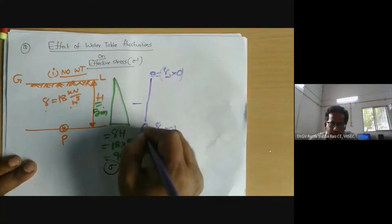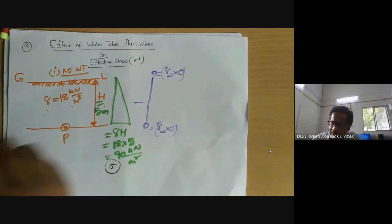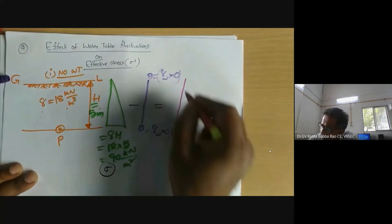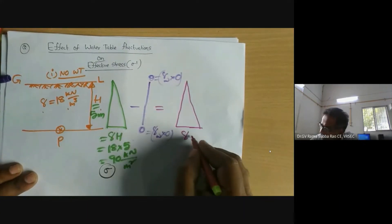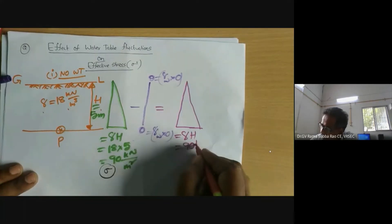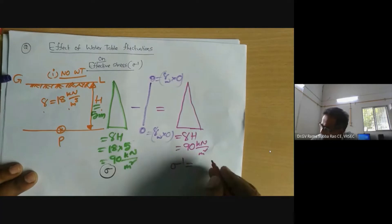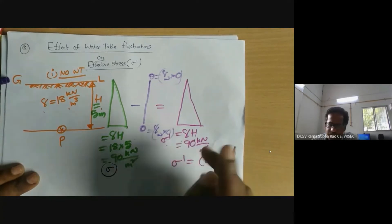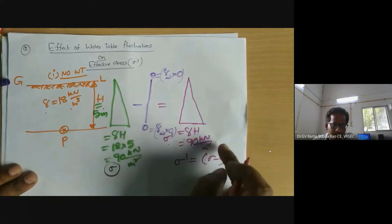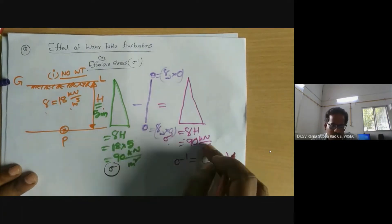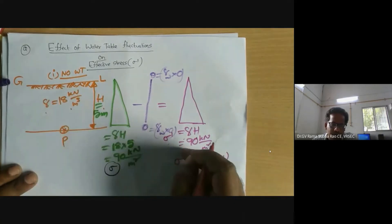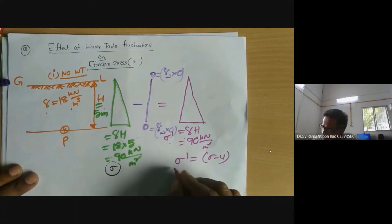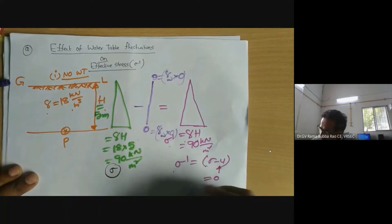The pore water pressure is zero from top to bottom, because there is no water table. Therefore, the answer regarding effective stress is very clear: sigma' = sigma − u = 90 − 0 = 90 kN/m². Since pore water pressure is zero, total stress equals effective stress. There is no change between total stress and effective stress here.